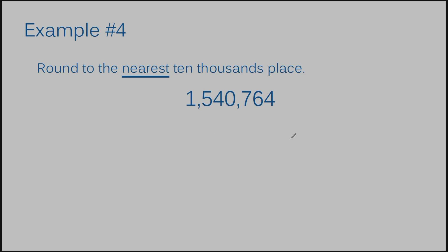Example number 4: round to the nearest ten thousandths place. I changed the wording here — sometimes books, teachers, or worksheets say 'round to the nearest ten thousandths place' instead of just 'round to the ten thousandths place.' It means the exact same thing. I just wanted to include both types of directions so you don't get confused if you see it worded differently. So, ten thousandths: if you remember place value, the number directly to the left of the first comma is the thousandths place, and the number to the left of that is the ten thousandths place.